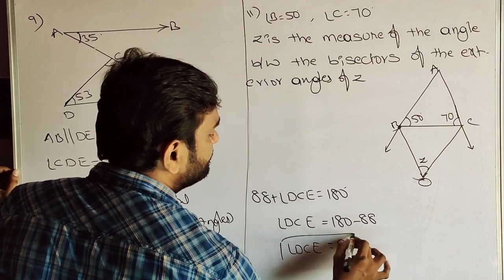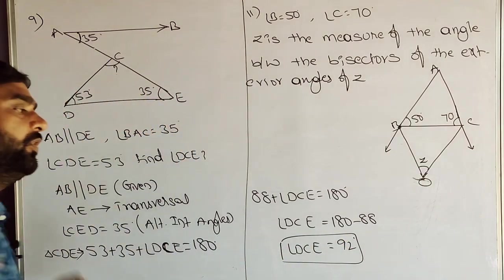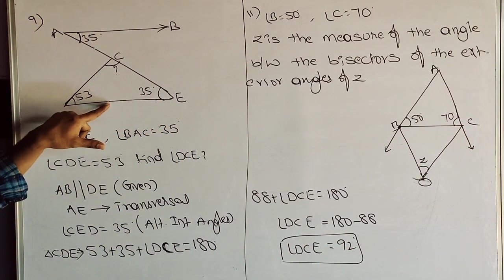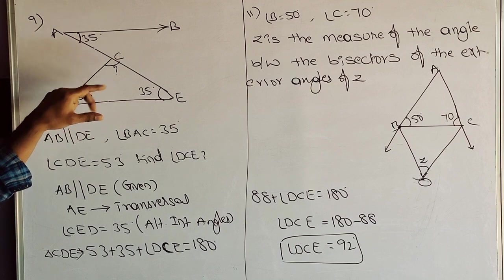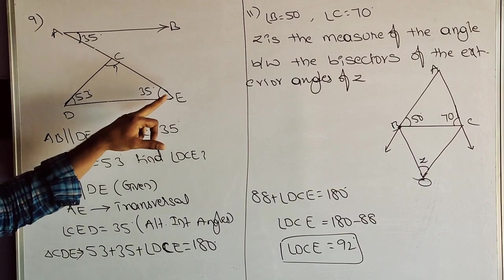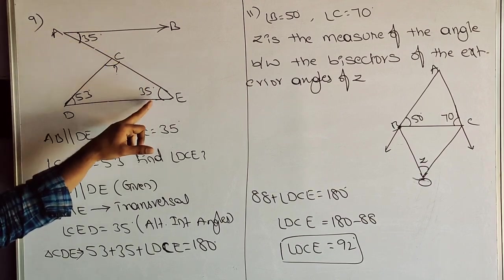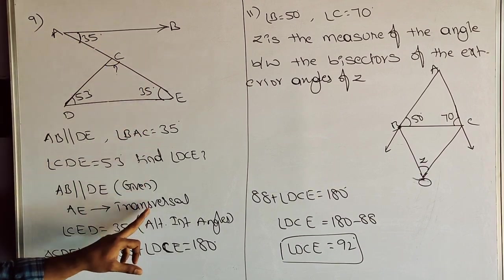These two lines are parallel, AE is the transversal, so these two angles are equal as alternate interior angles. Hope you got this.